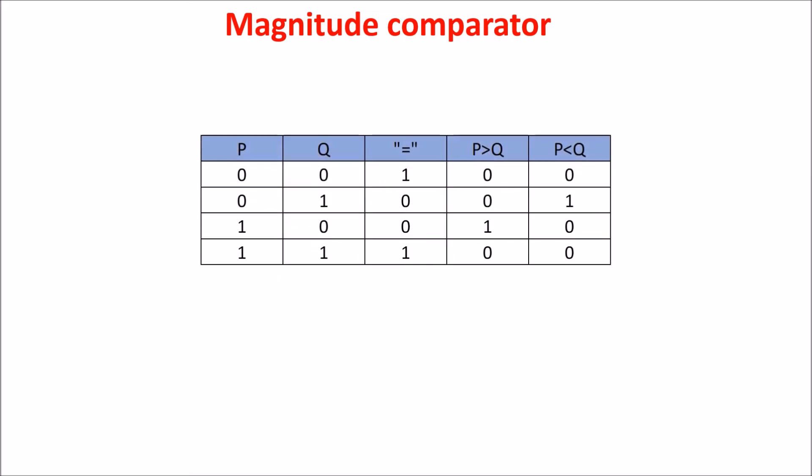This is the truth table of one bit comparator. We want the output equal one if the inputs are equal, so if they are both one or both zero. We want the output P greater than Q if P is one and Q is zero, and P less than Q if P is zero and Q is one.